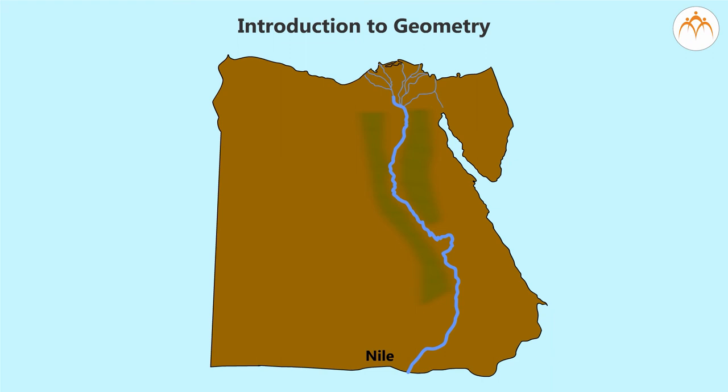So every year the area of a farm was measured, and next year the farm of same area was marked and given to the farmer for cultivation. Thus a method to measure a land or earth was developed.